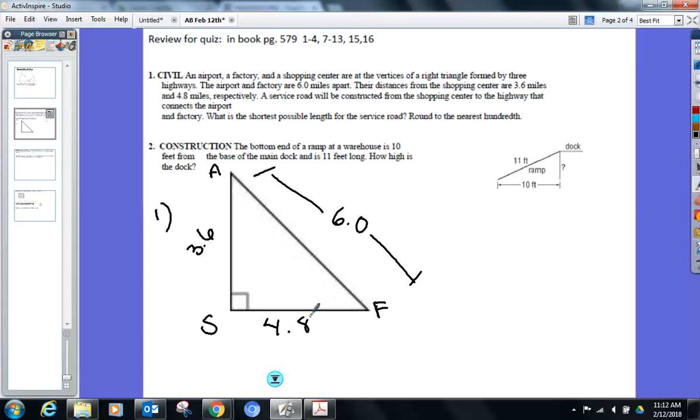A service road will be constructed from the shopping center to the highway that connects the airport and factory. So here's my service road from the shopping center to the highway that connects those two. What's the shortest possible length for that service road? You don't know this yet, but the shortest possible length from a point to a line is the perpendicular distance.